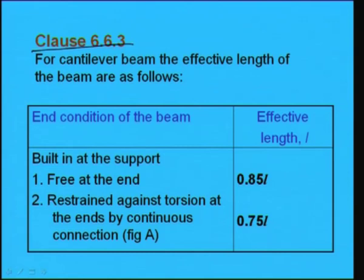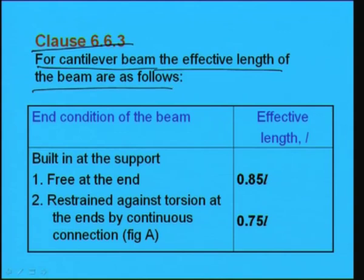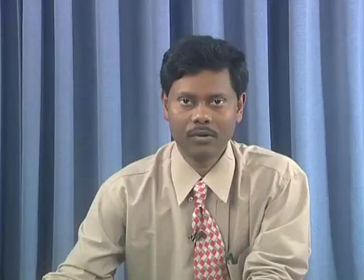In clause 6.6.3, for cantilever beams, the effective length is given in a table for different end conditions. For a cantilever built-in at the support with free end, the effective length is 0.85L. With restraint against torsion at the end by continuous connection, it becomes 0.75L. With restraint against lateral deflection and torsion at the free end (Figure B), the effective length is 0.5L.